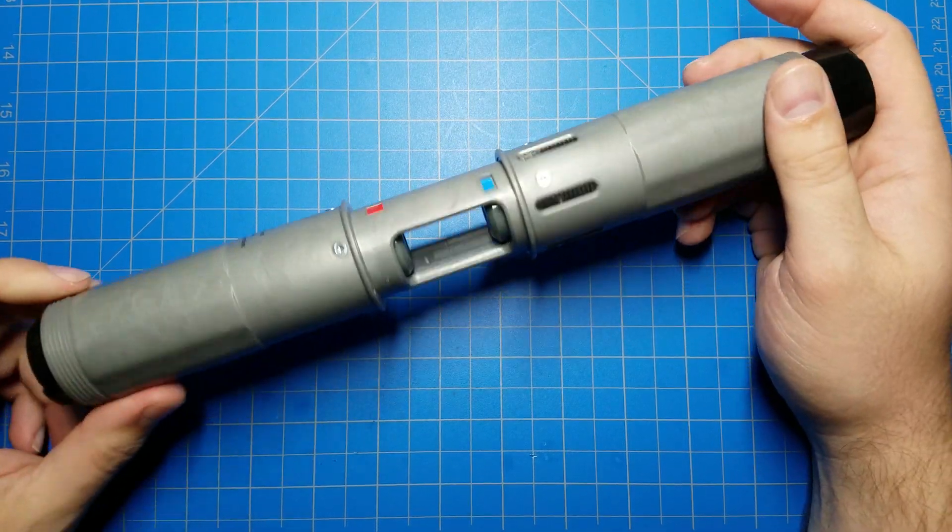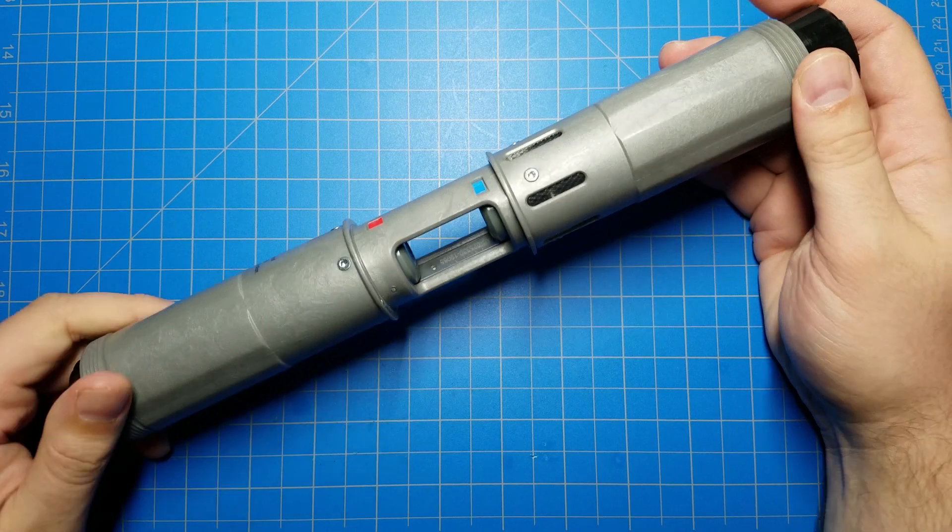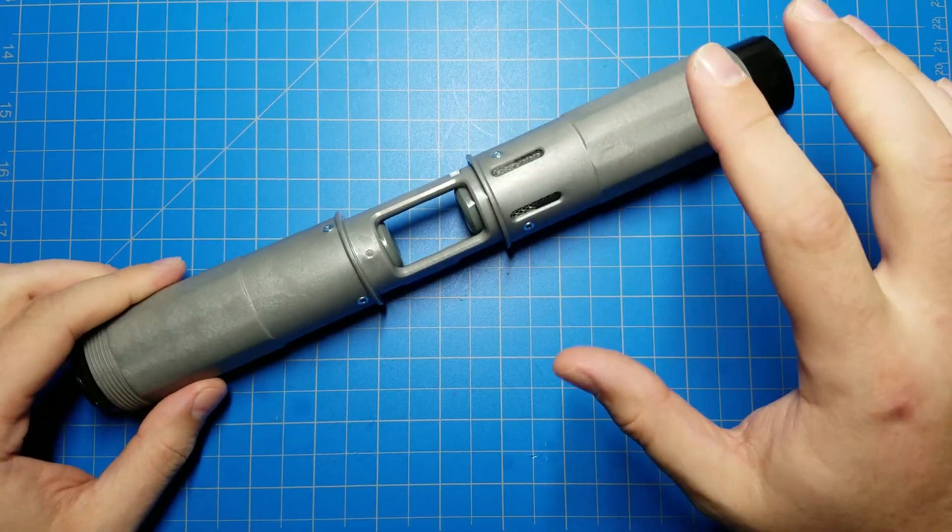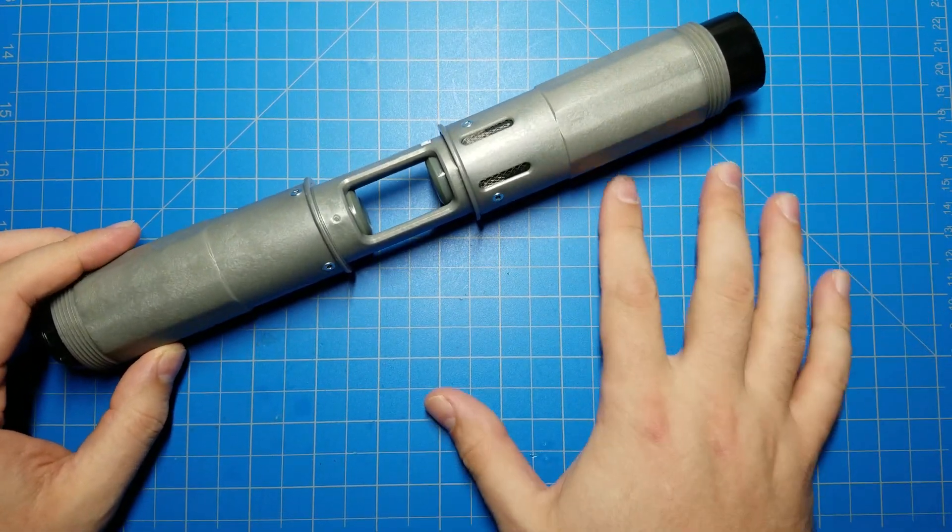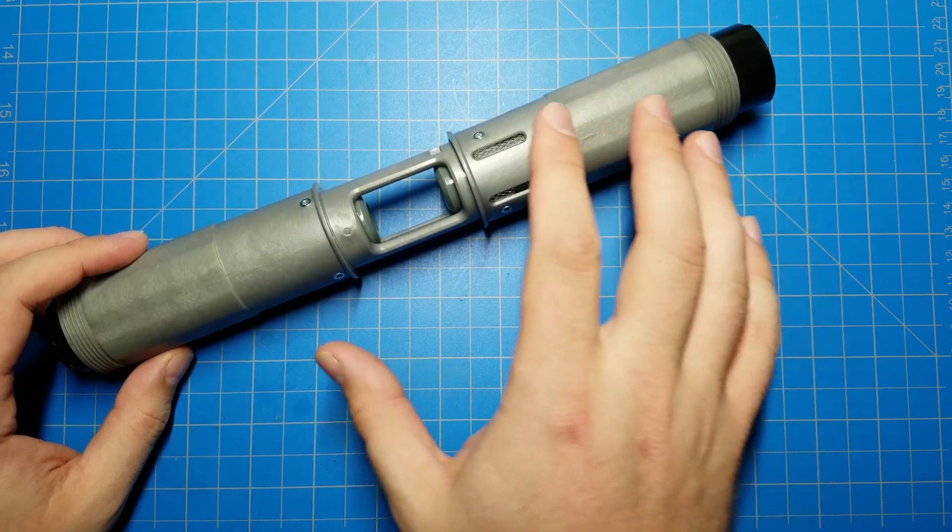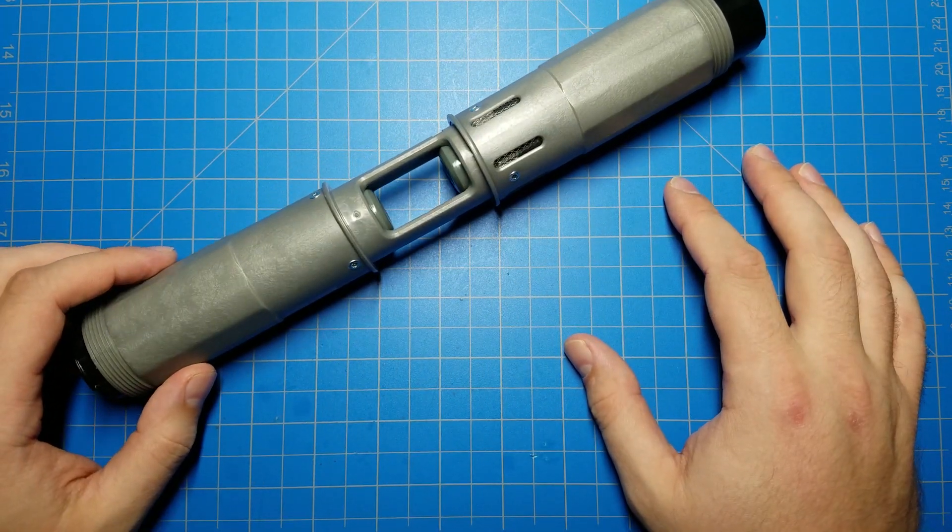This is a lightsaber chassis from Savvy's Workshop where you can build your own custom lightsaber. You're given this chassis and a selection of different metal pieces to put on it to make it look however you want it to look.